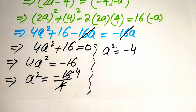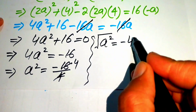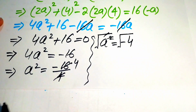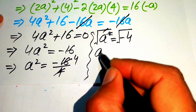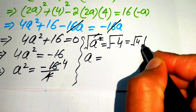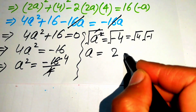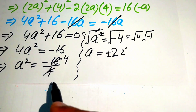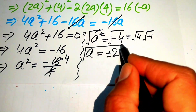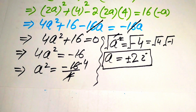Taking the square root of both sides, the square cancels and we get a equals ±√(−4). Separating the roots, √4 equals 2 and √(−1) equals i (iota), so a equals ±2i. These are the two complex values of the given equation and this is the final answer. Thank you for watching — please subscribe to my channel for more exciting videos.